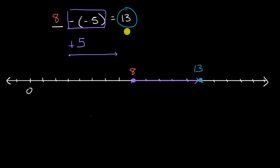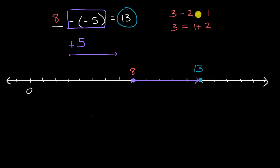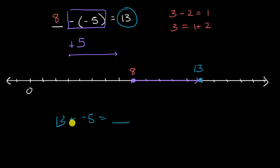Now there are other ways you might think about this. If something minus negative five is equal to 13, you could turn that subtraction equation into an addition equation — just like three minus two equals one means three equals one plus two. So over here, if this minus this equals that, then 13 plus negative five must equal our mystery number. And 13 plus negative five equals eight. There are a lot of ways to approach this, but they all get you to the same conceptual place.